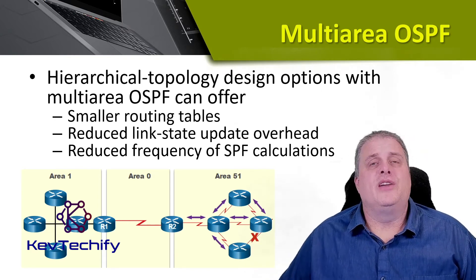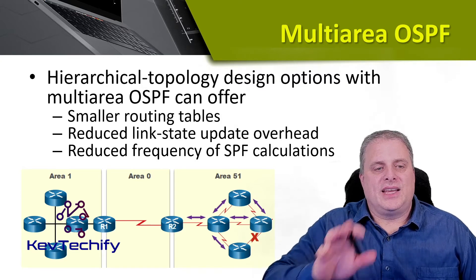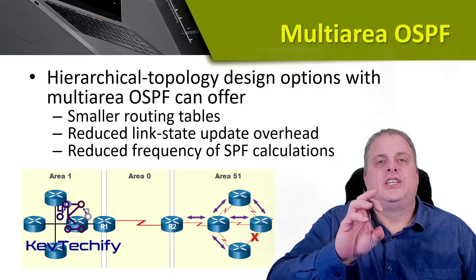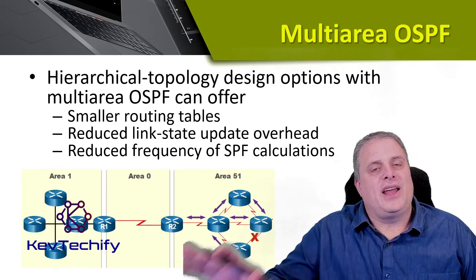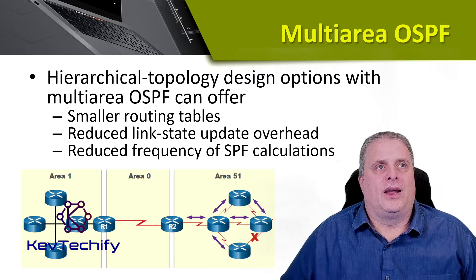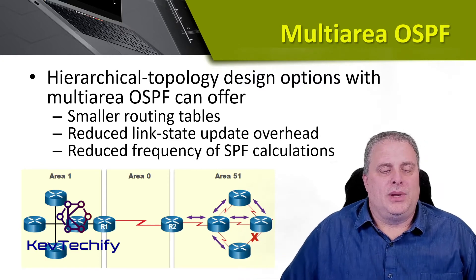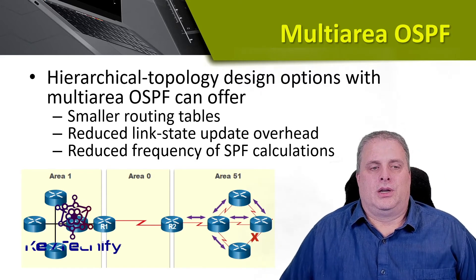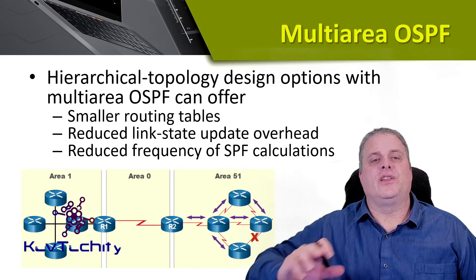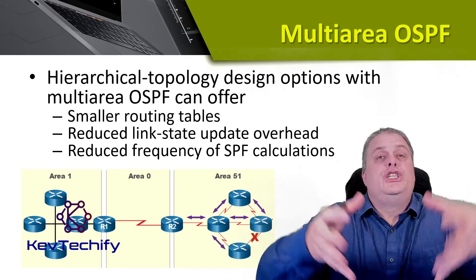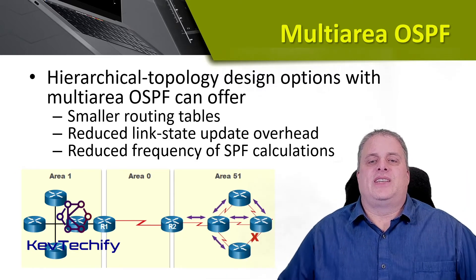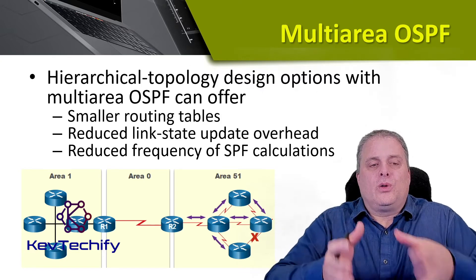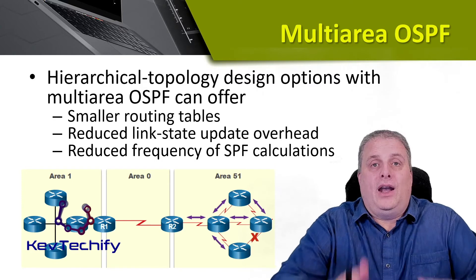Each area is essentially its own link state database. All the devices in that area share the same link state database. If you're outside that area, you're not part of it. Because you're only keeping track of devices in your area, you have smaller routing tables — you don't have to track every link state in the entire network, just those in your area. This also gives us reduced link state update overhead.